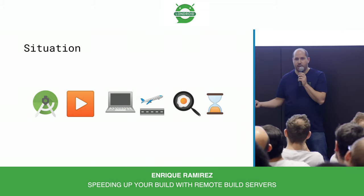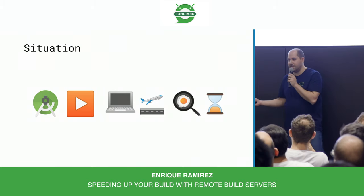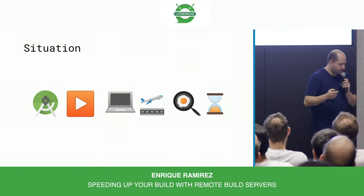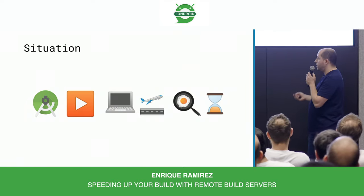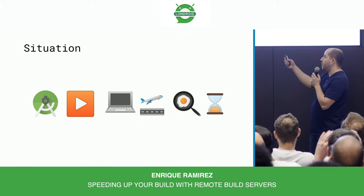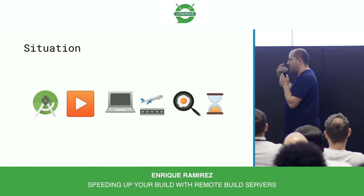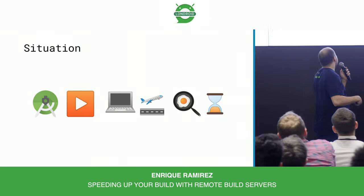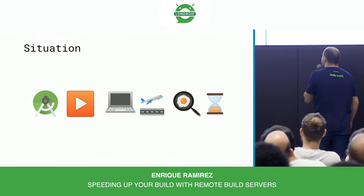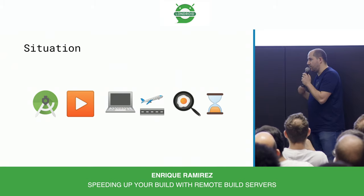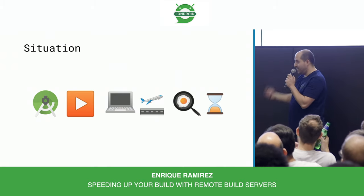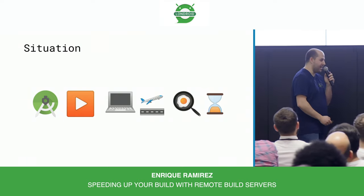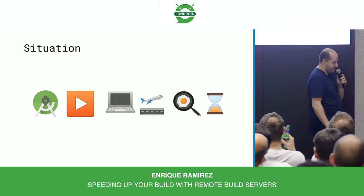I guess everyone here speaks emoji language, right? So let me explain. Sometimes this common situation: we open Android Studio, check out our code, it indexes, it takes some time. We click on the play button, it starts building - it's like a plane that is about to take off. It gets really, really hot, up to a point where you can fry an egg on it, and it takes forever. Not a very cool situation, but I think people relate to that.